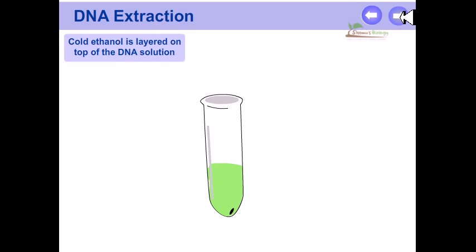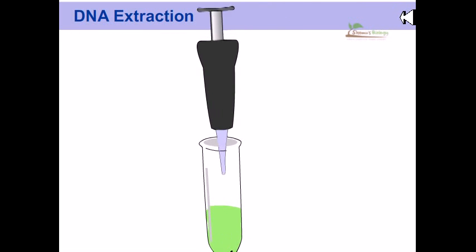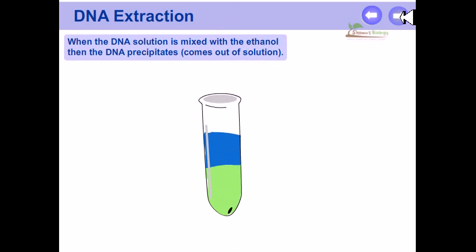Cold ethanol is layered on top of the DNA solution. When the DNA solution is mixed with ethanol, the DNA precipitates and comes out of solution.